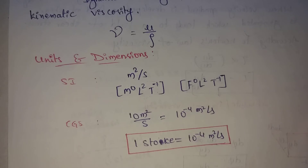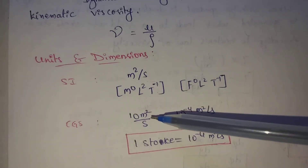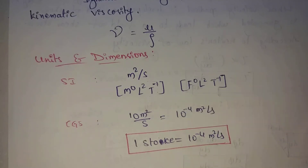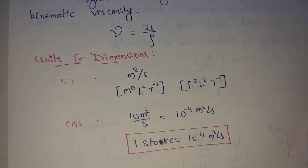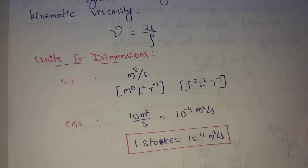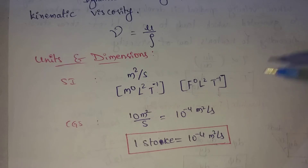For CGS units, 1 Stoke equals 10 power minus 4 meter squared per second. For kinematic viscosity, we use Stokes in CGS. We have already discussed Dynamic Viscosity in previous videos, where the CGS unit is Poise. Here, kinematic viscosity is Stokes, and dynamic viscosity is Poise.